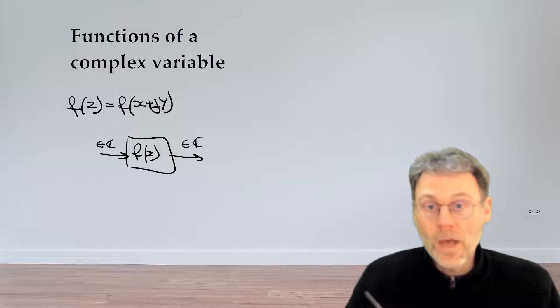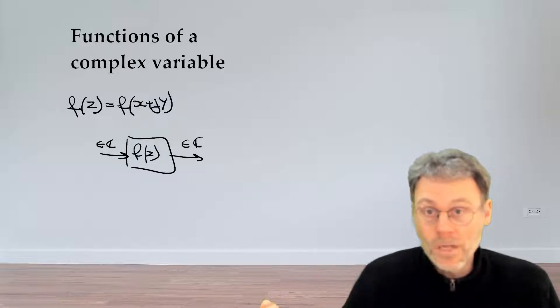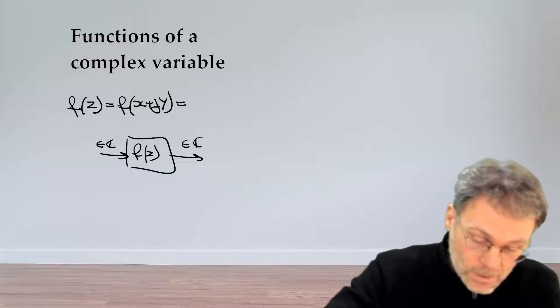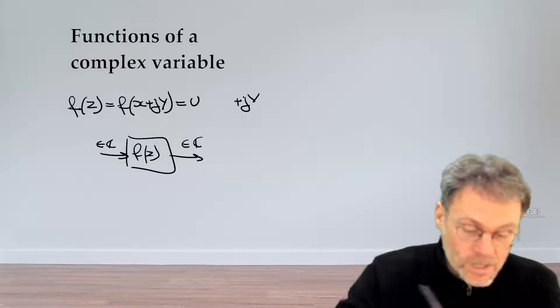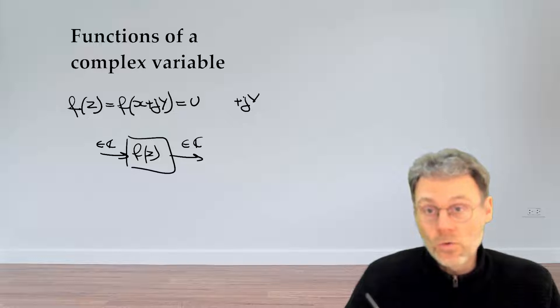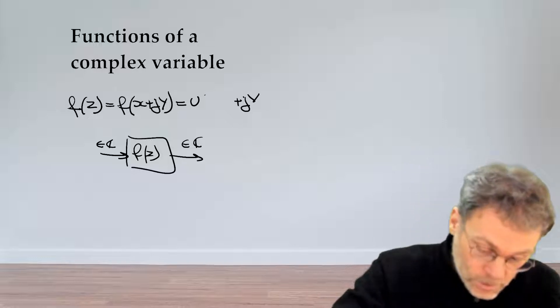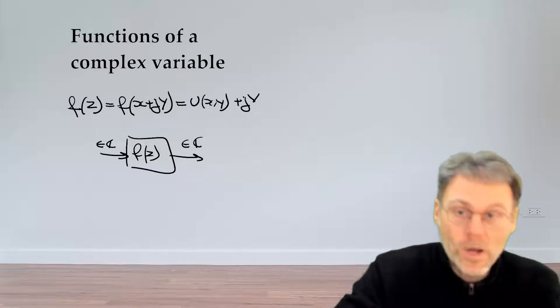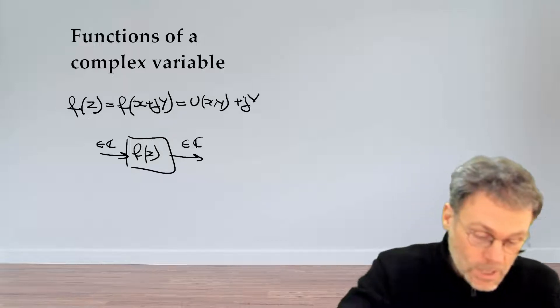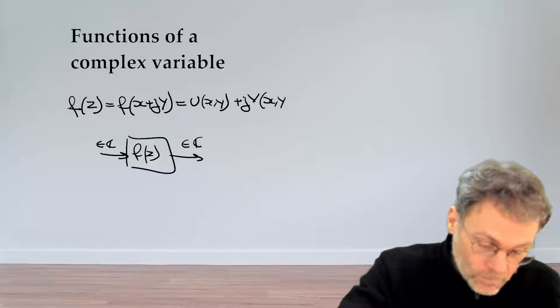So it will also have a real part u and an imaginary part v. We can actually also write this as u plus jv and the real part u will obviously depend on the inputs x and y if we write it as two real variables, and the same for v.